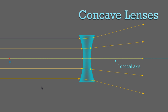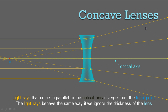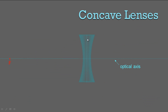To reiterate: the light comes in, bends out towards the thickest part of the lens, and diverges. Light rays that come in parallel to the optical axis diverge from the focal point — they start spreading out from the focal point and get more spread out over time. The light rays behave the same way if we ignore the thickness of the lens, just like we can ignore how thick a mirror is. We can draw a straight line to represent a concave or convex lens.